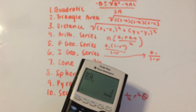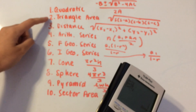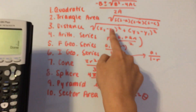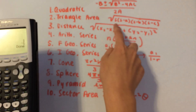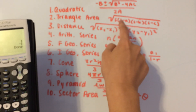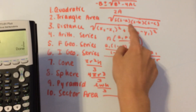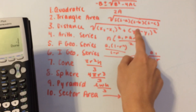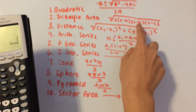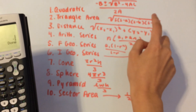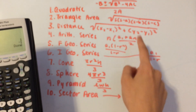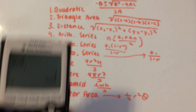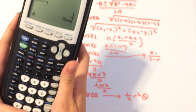Now let's move on to the area of a triangle formula. This is actually Heron's formula: the square root of the semi-perimeter times (semi-perimeter minus the first side) times (semi-perimeter minus the second side) times (semi-perimeter minus the third side).